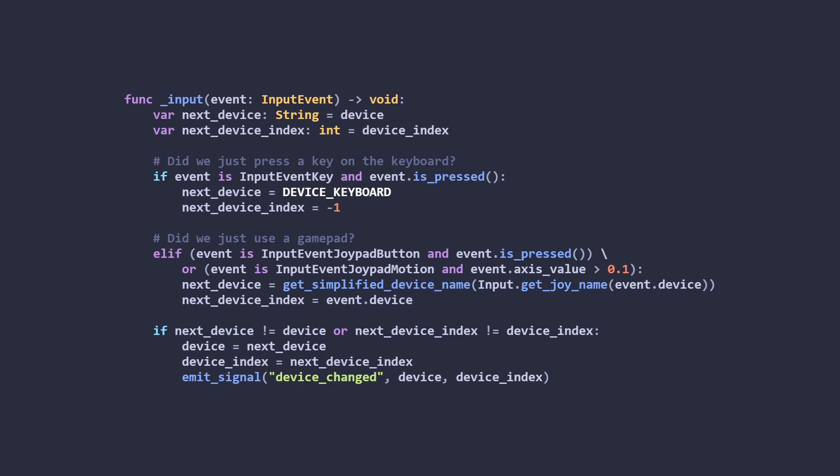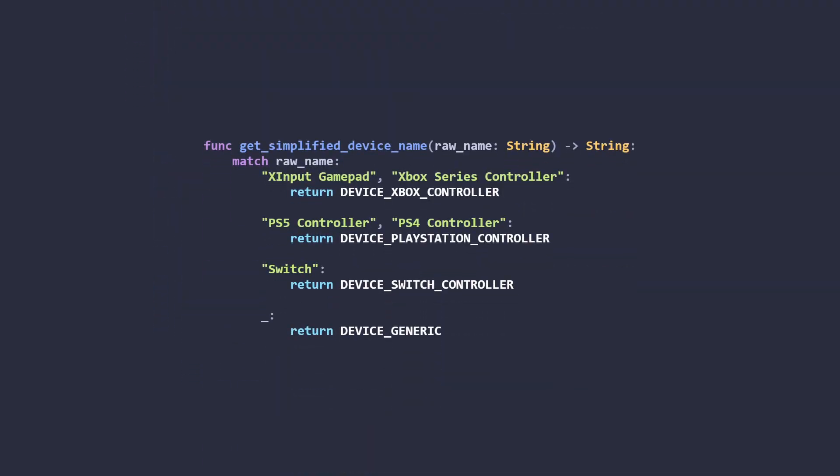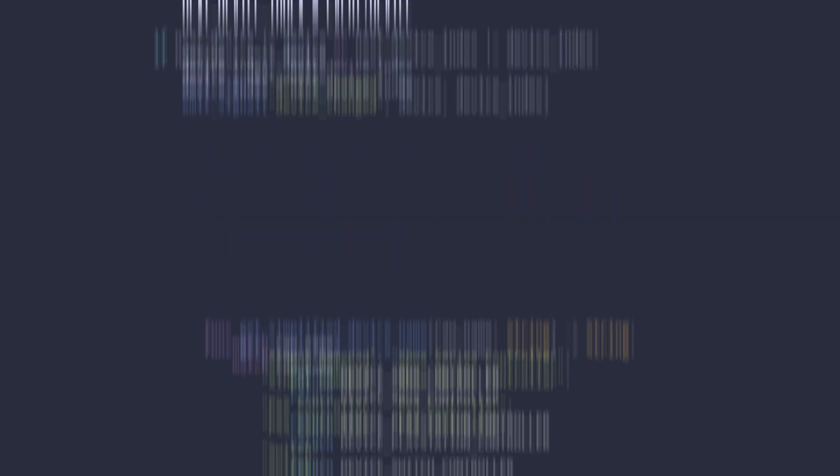There's not actually that much to it. If the last input was from a keyboard, then we respond with keyboard. If the last input was from a gamepad, then we look at what Godot thinks the name of the gamepad was. I do a bit of tidying on the actual device name to simplify which textures I need to load later on. If the device has changed since last time, then I emit a signal to notify my indicators.